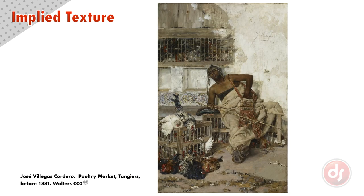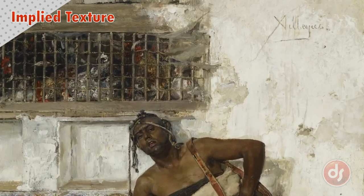Artists can also activate our sensations of touch simply by implying texture. This painting of 'A Poultry Market' by Jose Viega Cordero expertly captures the variety of surface textures. With a few brushstrokes, he implies the roughly applied plaster on the wall, the old dried wood, and the worn leather strap. The artist even signs his name in the upper right as though someone had inscribed it into wet plaster. Our mind searches the library of sensations we have experienced and matches them up with indications of texture made by the artist. This subtle rendering of texture adds a level of interest and engagement in our minds.